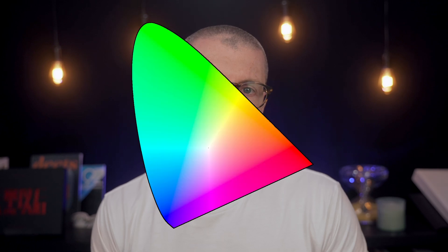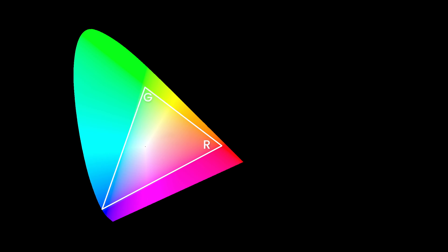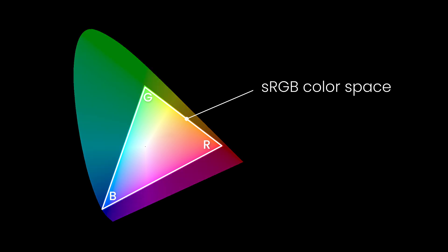Scientists have precisely measured the wavelengths within the visible spectrum and mapped them out onto a graph that looks a little bit like a rainbow-colored horseshoe. A color space is just a triangle that sits on top of this graph, and it defines the purest red, green, or blue that a device is either capable of capturing or reproducing. Points outside of the triangle cannot be reproduced or captured by a device which uses that color space. The bigger the color space is, the more colors it can capture or reproduce.